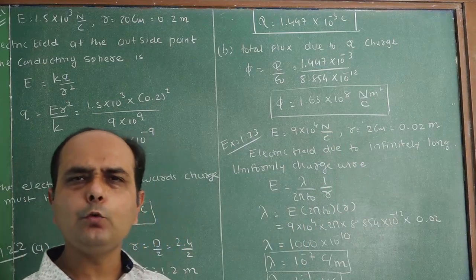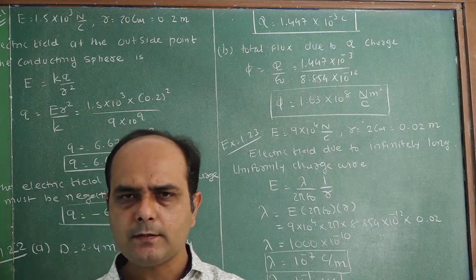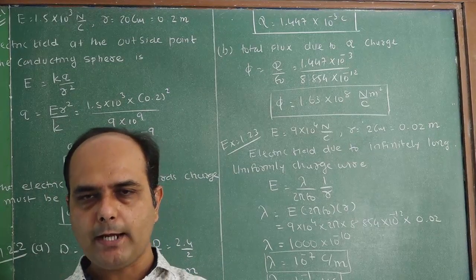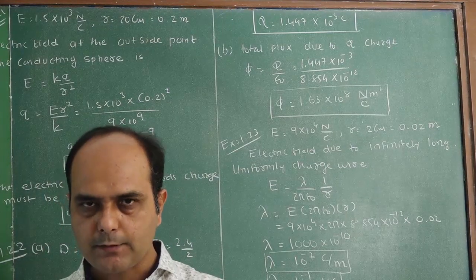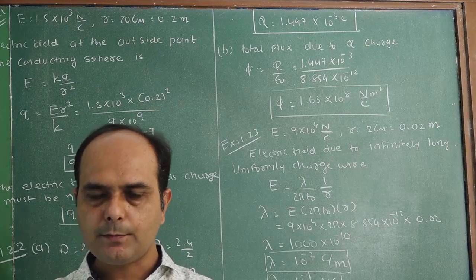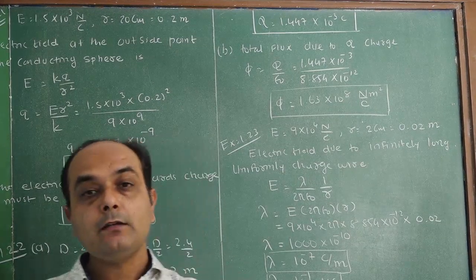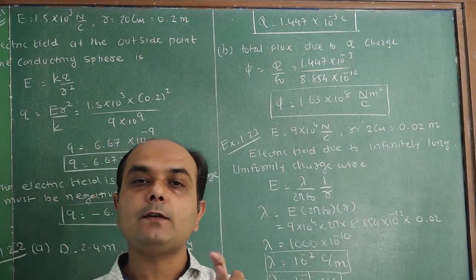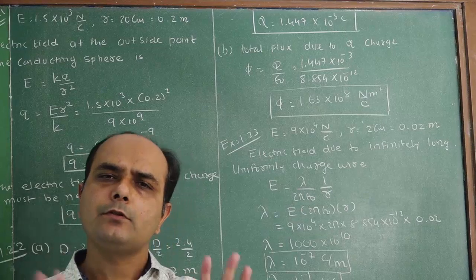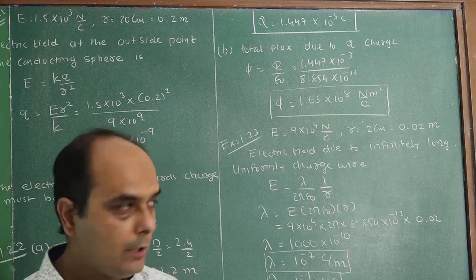The flux coming out is 1.63 into 10 to the 8 Newton meter square per coulomb. Only two equations are used: first, sigma = q by 4 pi r square — make q the subject; second, Φ = q by epsilon 0.